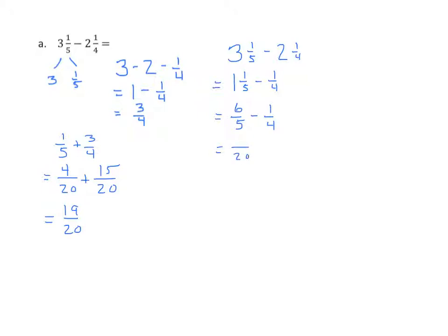Find our like units, which again are twentieths. And 6 fifths is 24 twentieths. And 1 fourth is 5 twentieths. We'll subtract 24 minus 5. We get 19 twentieths. Two approaches. Both work well. Let's now go on and do another example.